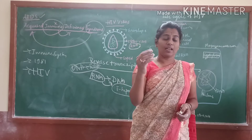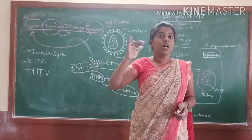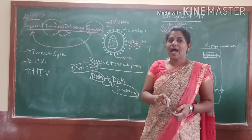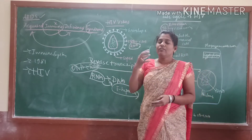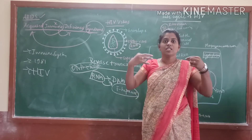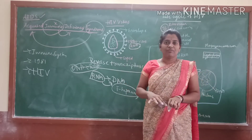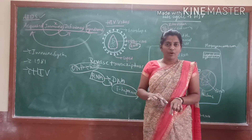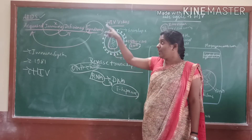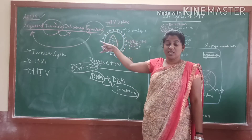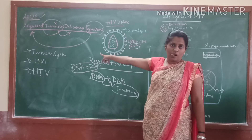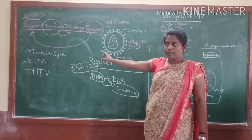Due to that, the T helper cells — mainly the information given by these T helper cells — they are attacked mostly. Due to this, the immune system gets collapsed and stimulation of the immune system is destroyed. They collapse our immune system. Due to that only, plenty of diseases can affect our body due to AIDS. That's why it is called Acquired Immunodeficiency Syndrome.